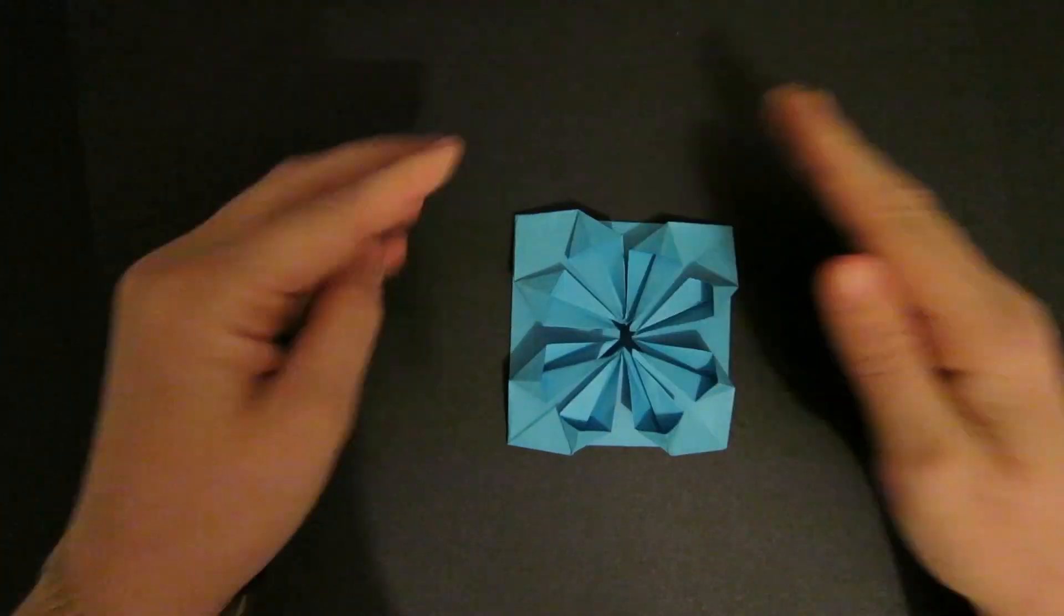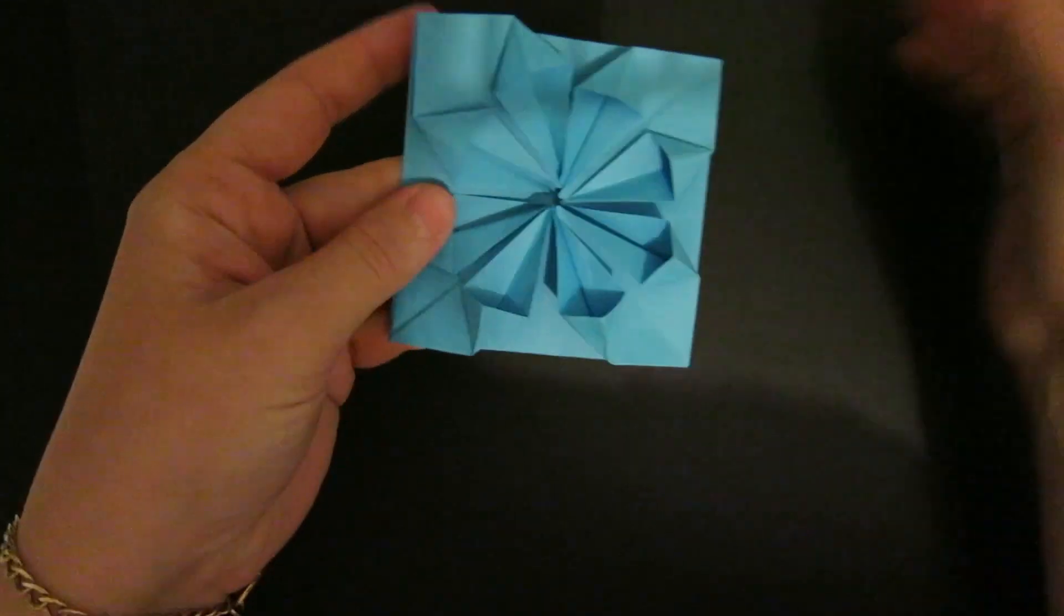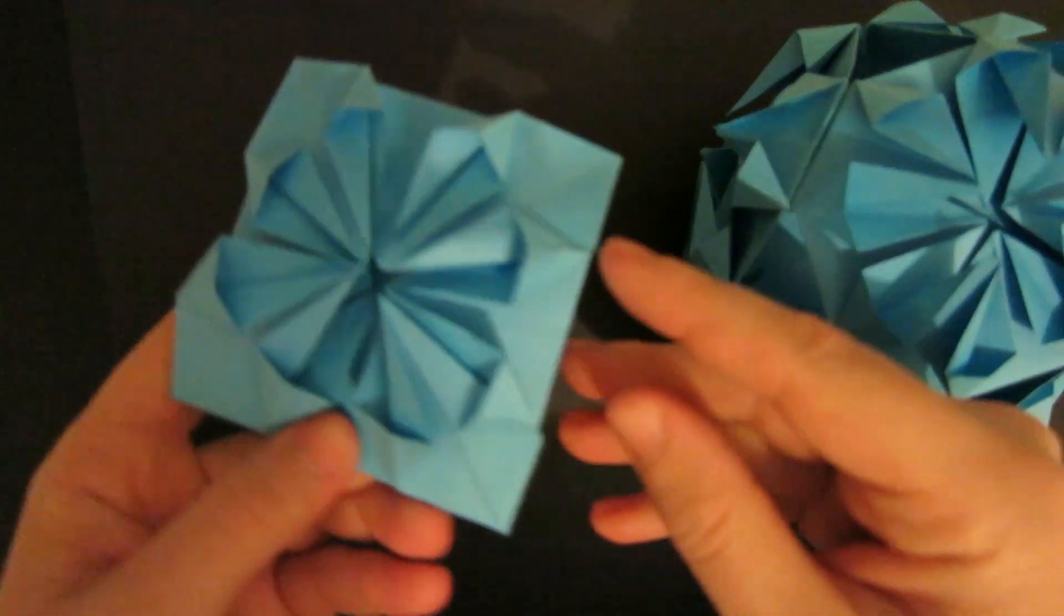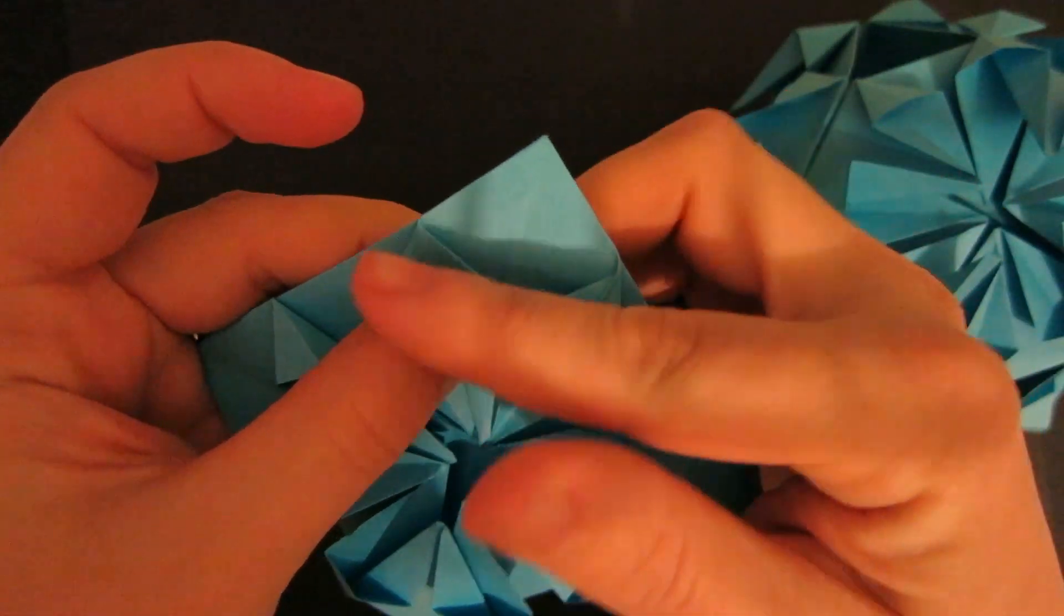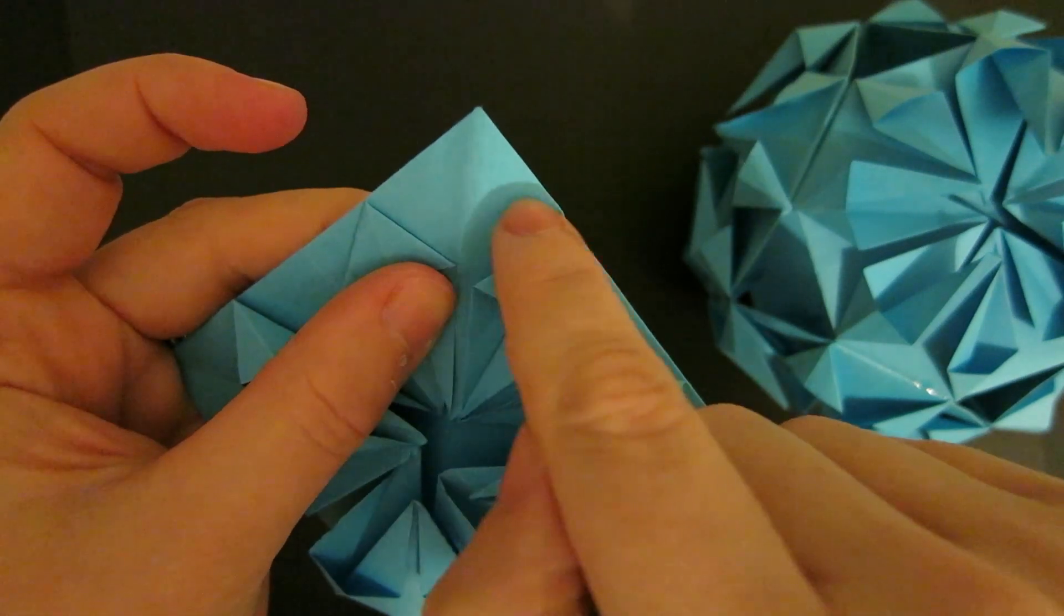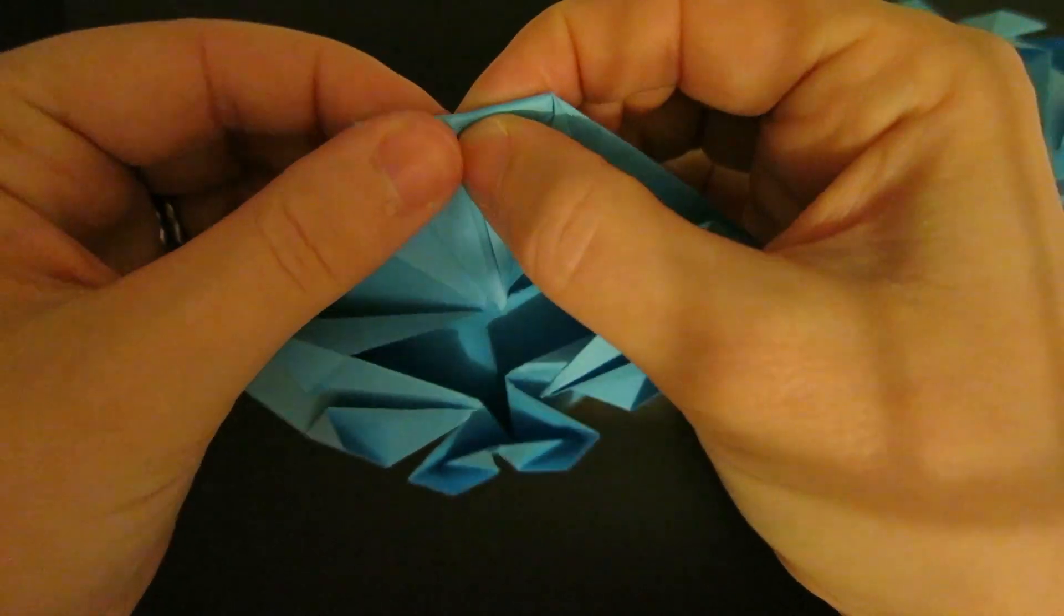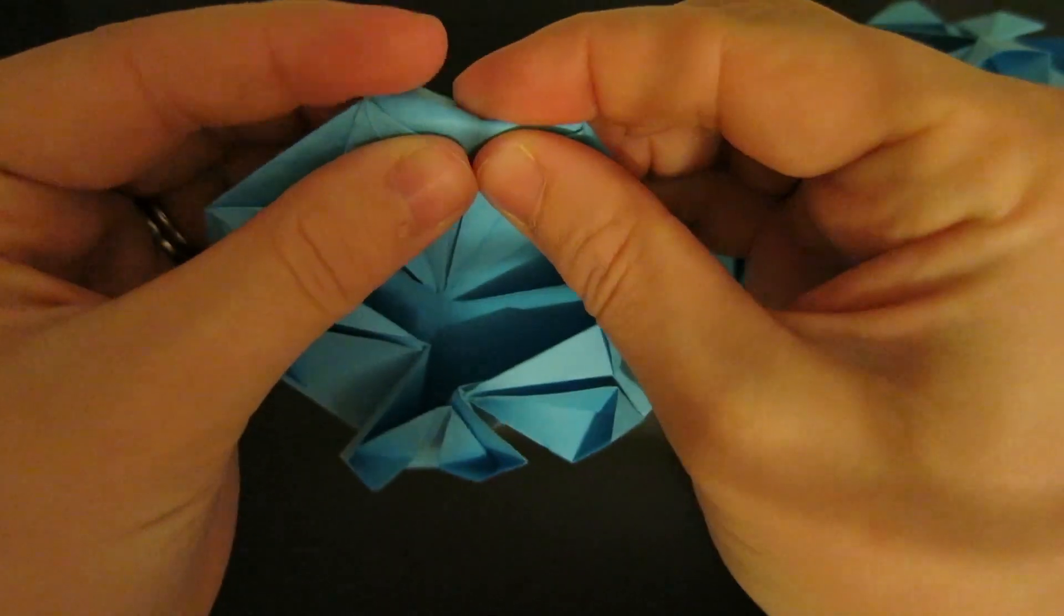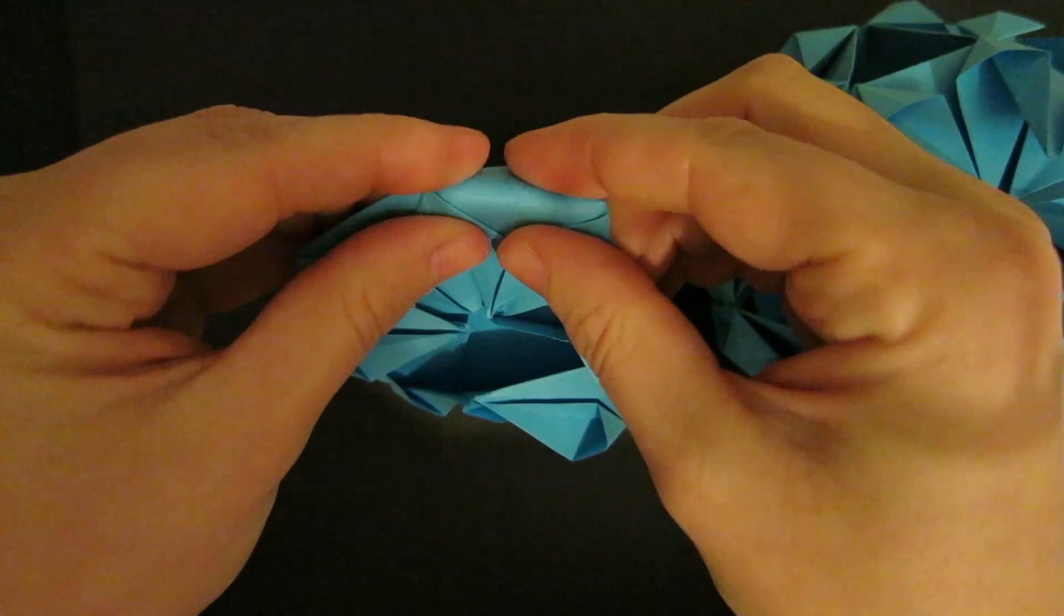Now if you're going to be turning this into a kusudama you want each of these corner triangles to be folded back so that you're actually folding along the point where this point and this point would connect just along there. There you go and fold back and fold back again and do the same for all four corners.